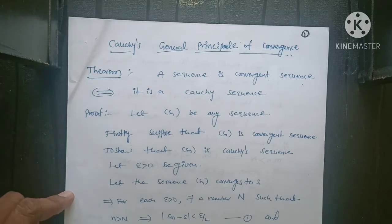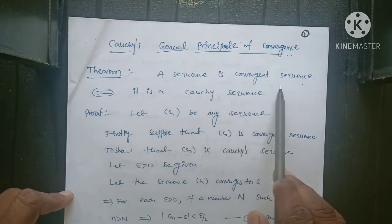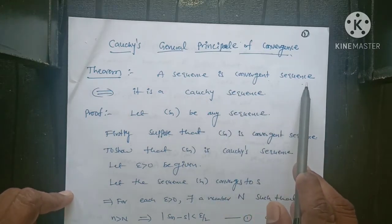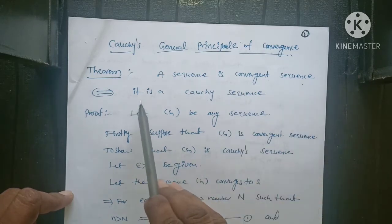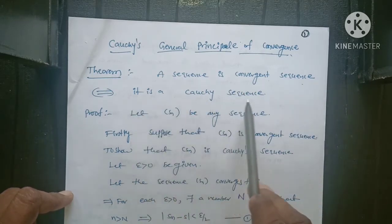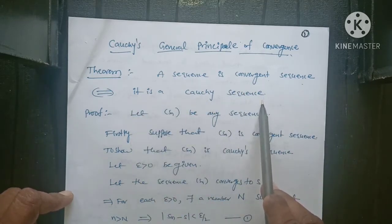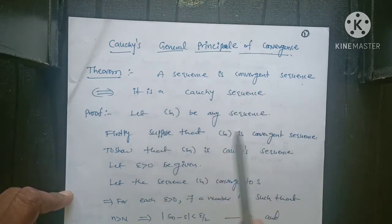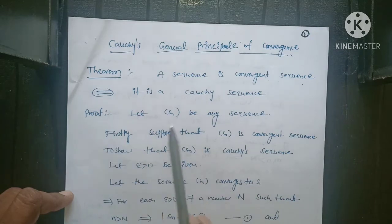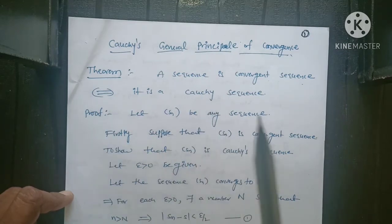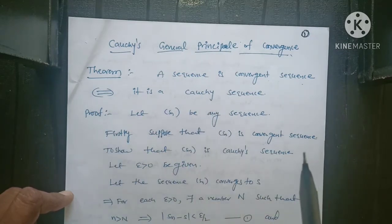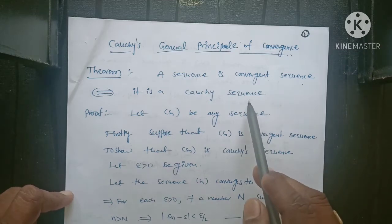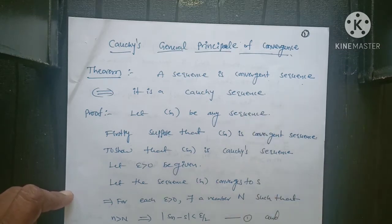Theorem: A sequence is a convergent sequence if and only if it is a Cauchy sequence. It is a necessary and sufficient condition. If the sequence is convergent, that sequence must be a Cauchy sequence. If the sequence is a Cauchy sequence, that must be a convergent sequence.